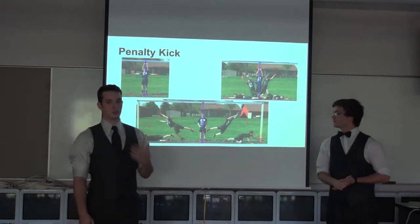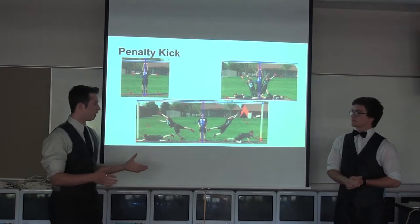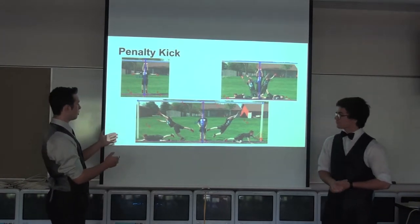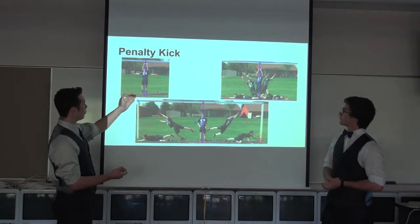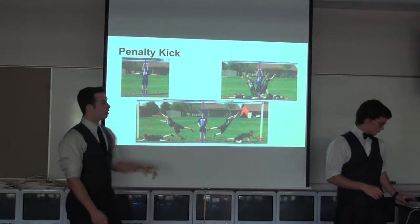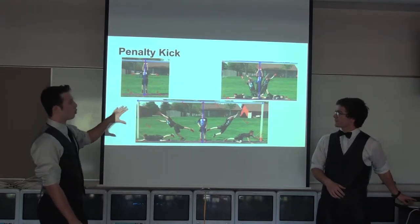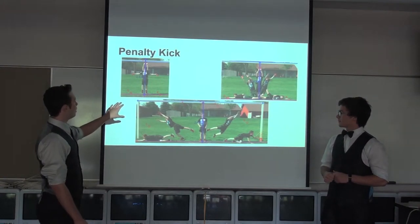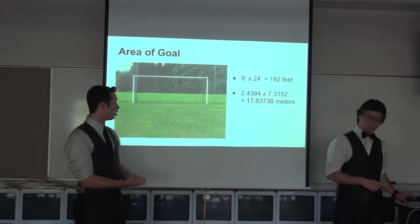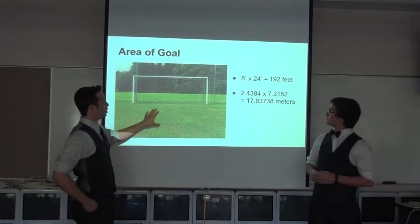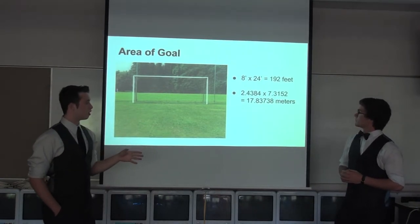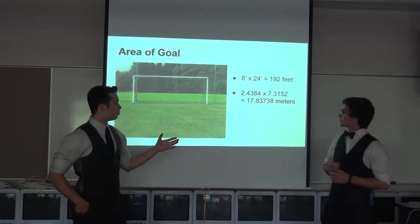A big key part about being a goalie is the penalty kick. This occurs when there's a foul inside the 18, and the ball is set up about 12 yards away — it's just the player and the goalie. There are typically three reactions: a goalie stands in place and jumps up, falls one way or the other, or leaps left or right. I recorded my brother — a JV goalie — doing these motions and spliced them together in Photoshop to enter into our tracker application. The area of the goal is 8 by 24 feet for a total of 192 square feet, or 17.837 square meters.